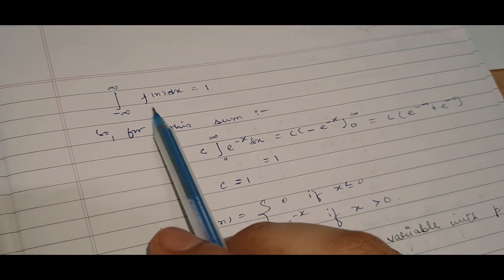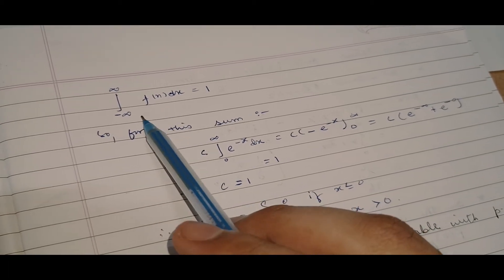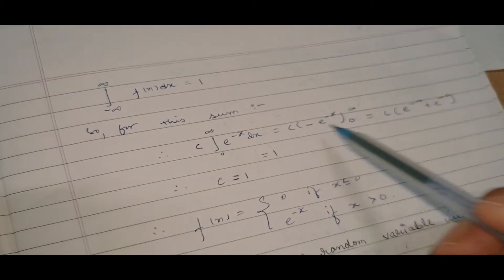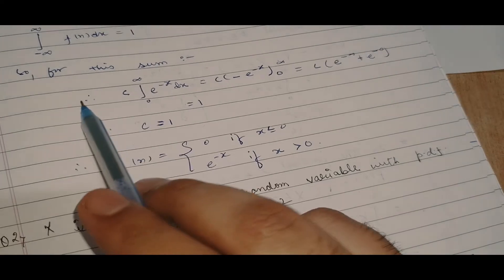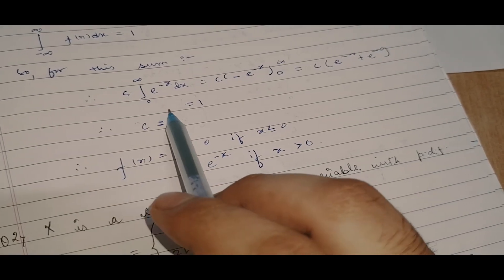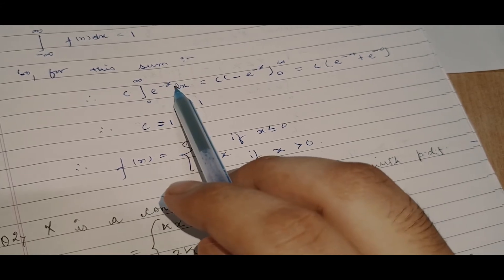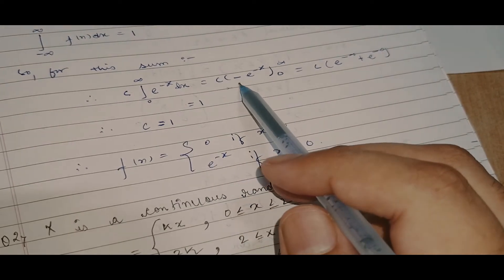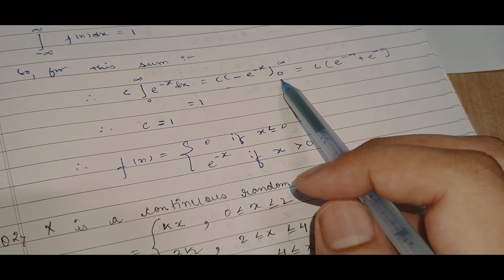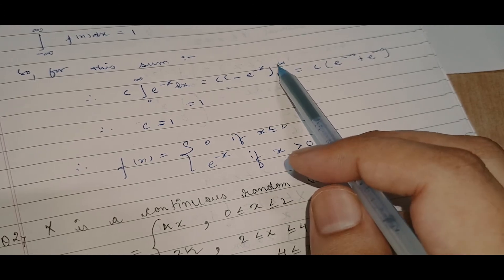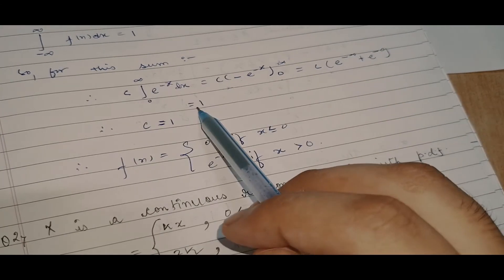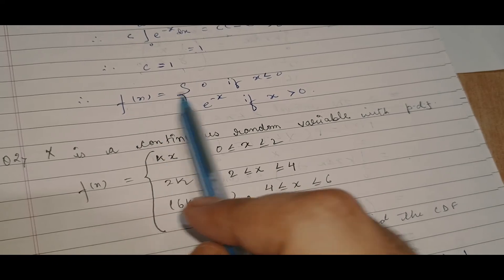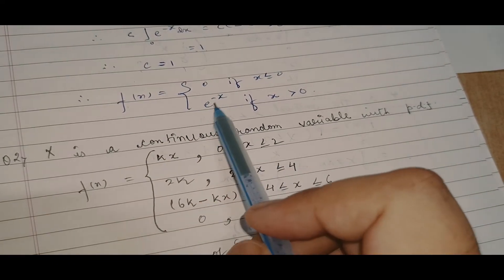Now we find the value of c. Using the property of the probability density function: the integral from minus infinity to infinity of f(x) dx equals 1. Here the limits are from 0 to infinity, so: the integral from 0 to infinity of c times e to the power minus x dx equals 1. Putting c outside gives c times [minus e to the power minus x] from 0 to infinity, which equals 1, so c equals 1.